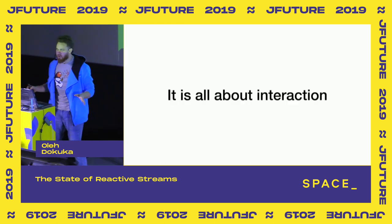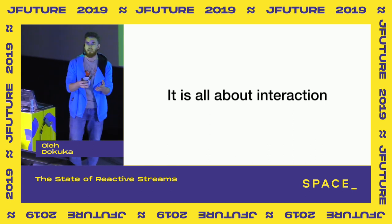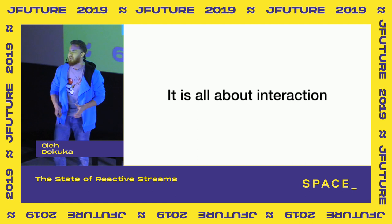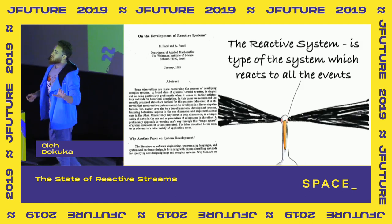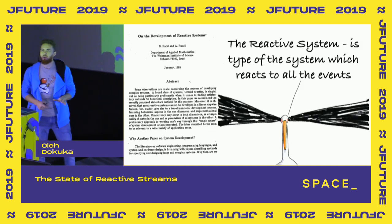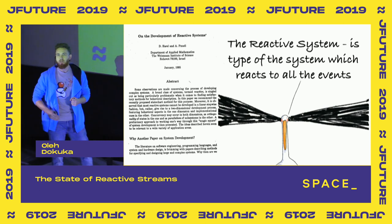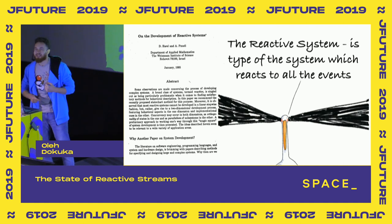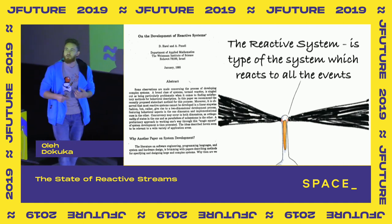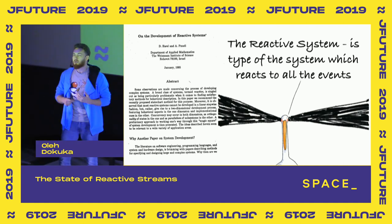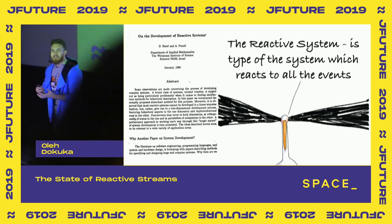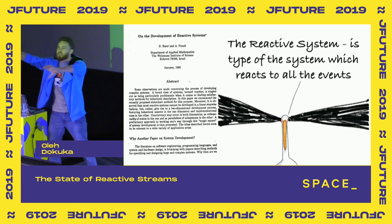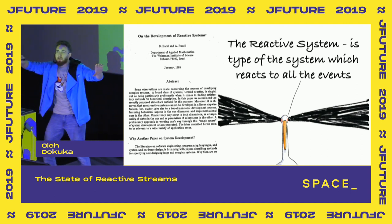Reactive is about interaction — the ability to react to actions in a timely manner. The first mentioning of the word 'reactive' happened in 1985 in the paper on the development of reactive systems. In this context, reactive is coupled with 'system.' A reactive system is a type of system which reacts to all changes and events continuously, without stopping.